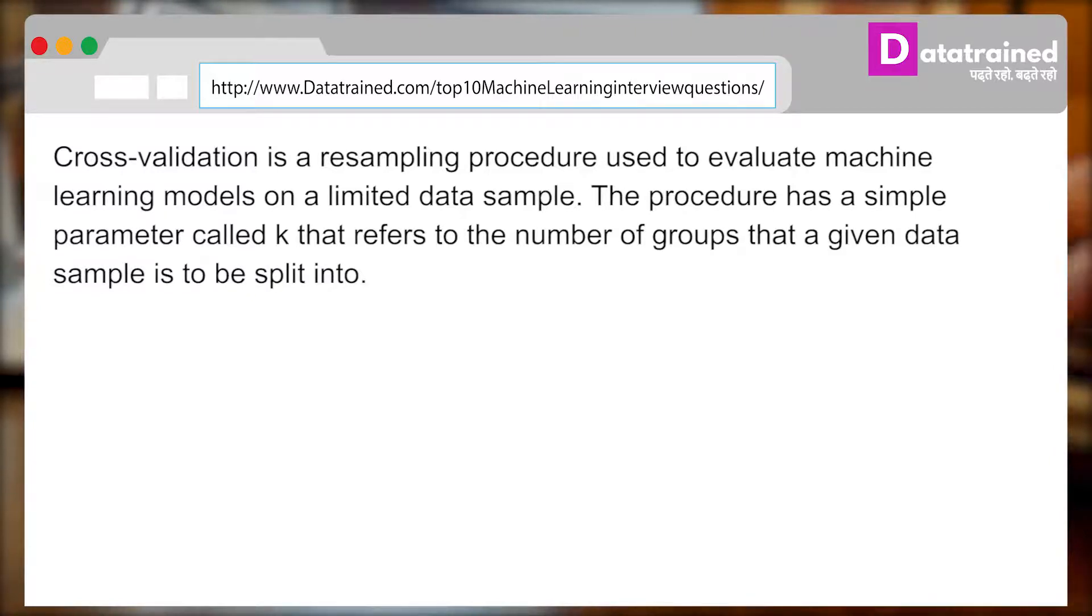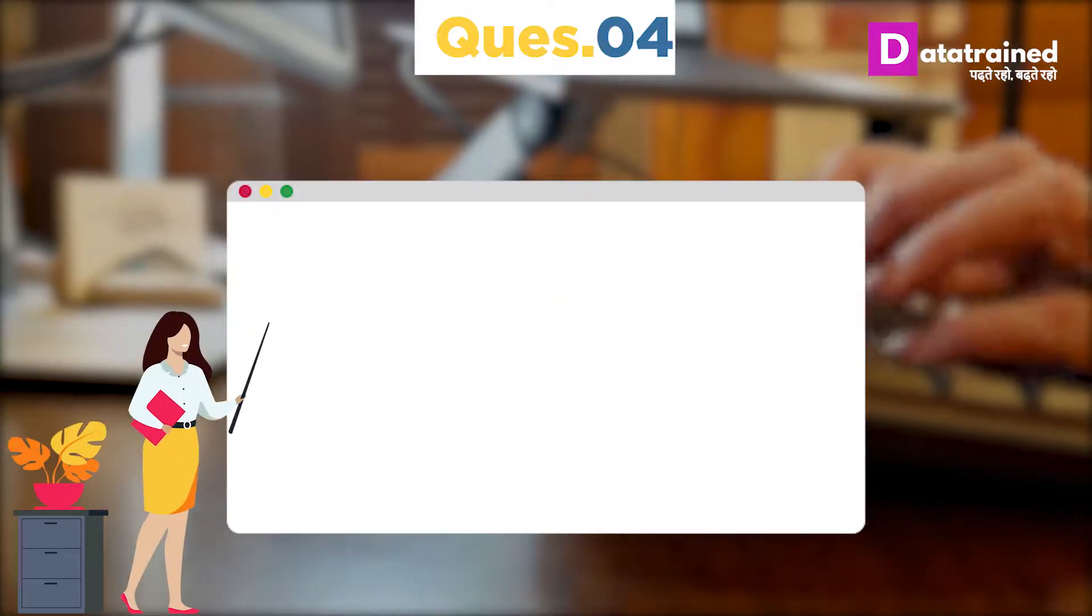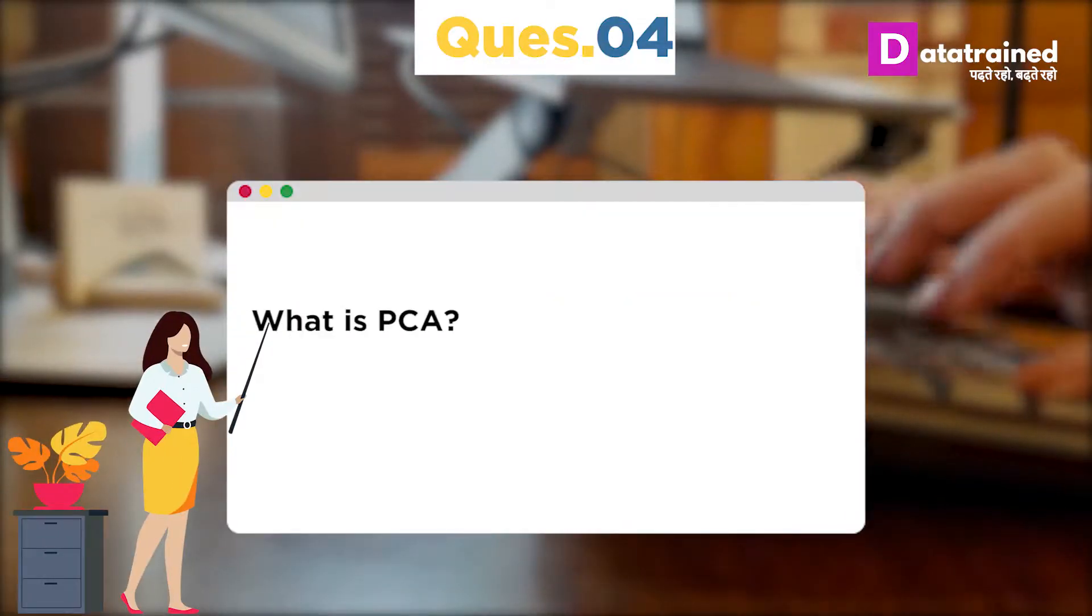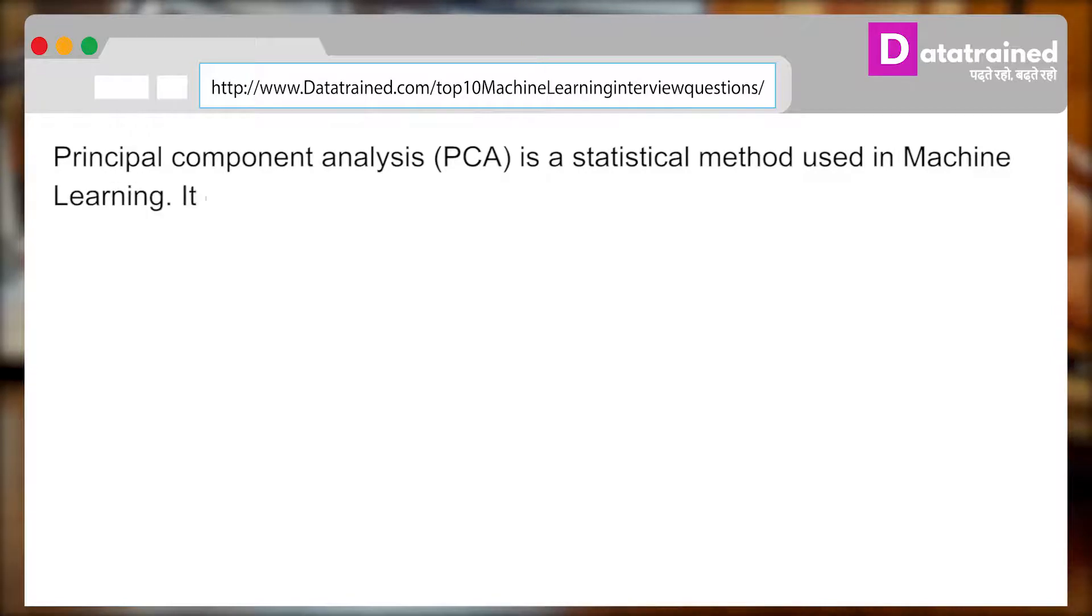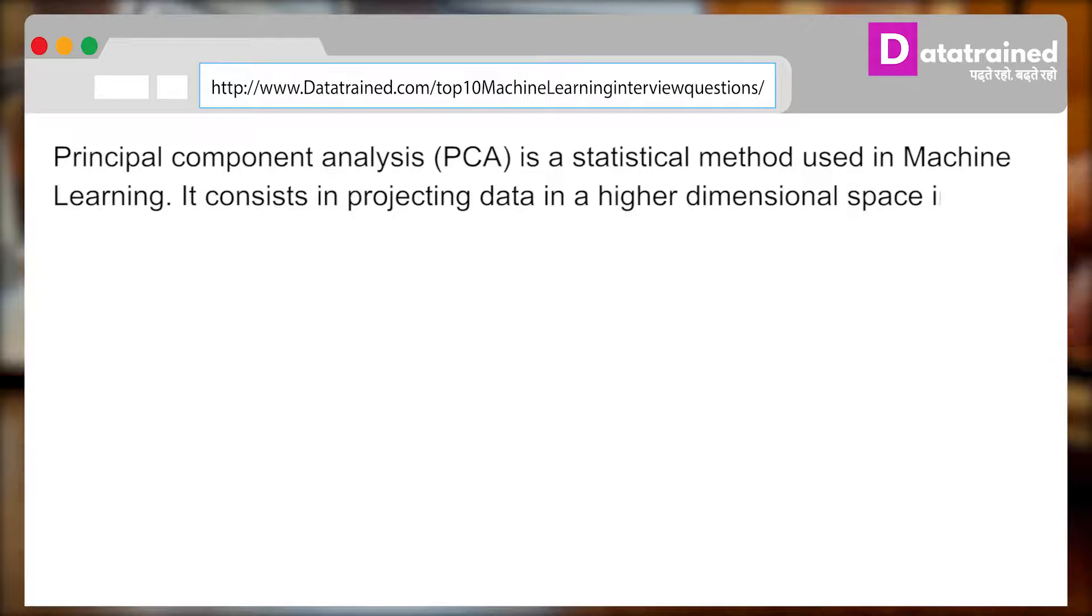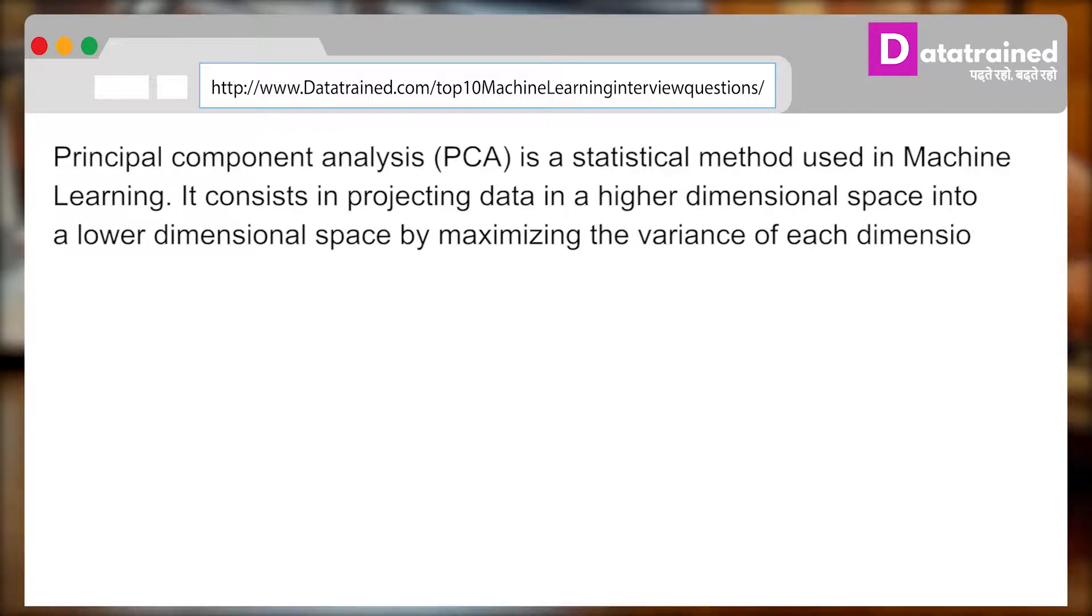Now, going deep into machine learning, you can be asked: What is PCA? And you can answer: Principal component analysis or PCA is a statistical method used in machine learning. It consists in projecting data in a higher dimensional space into a lower dimensional space by maximizing the variance of each dimension.